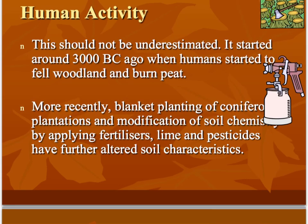The last influence on soil formation is human activity, and this shouldn't be underestimated. Going back to around 3,000 to 4,000 years BC, prehistoric civilisations began felling trees, burning heather and speeding up soil erosion. In the present day, these trends have increased. Things like blanket planting of coniferous trees where there was originally deciduous mixed woodland completely changes the soil underneath — acidic pine needles fall on soil previously used to deciduous leaves, changing the soil chemistry. To counter this, people apply fertilisers, spread lime and spray pesticides, which again change the soil characteristics.